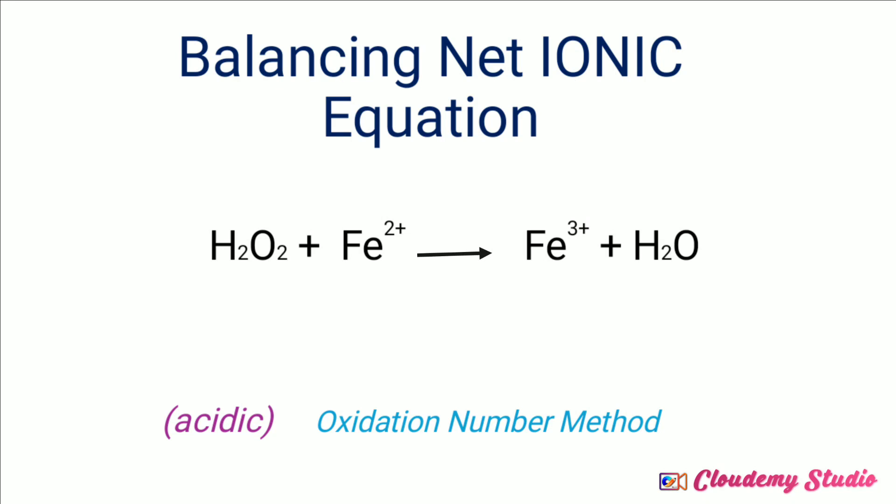Hello friends, let's balance one more net ionic equation. This equation is for the reaction between hydrogen peroxide and iron 2 plus ions to form iron 3 plus ions and water molecules. This reaction takes place in acidic medium. Let's balance this equation by the oxidation number method.